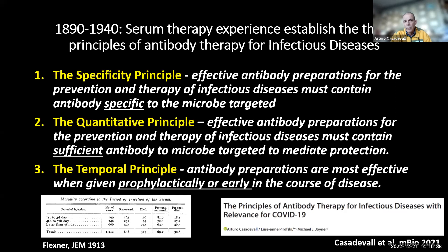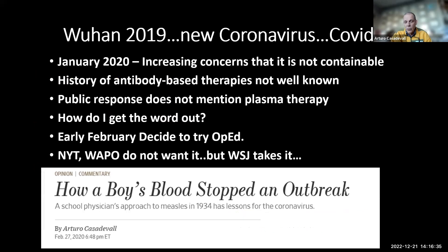There are three principles to antibody therapies. First, the specificity principle — the antibody preparation must bind to the target. Some clinical trials had convalescent plasma units with no antibody in a significant number. Second, the quantitative principle — you must give sufficient antibody to get an effect. Third, the temporal principle — to be effective, it must be given early in disease. Data from the Journal of Experimental Medicine in 1913 on meningococcal meningitis showed mortality was 18% on day one versus 27% if waiting until day four to seven.